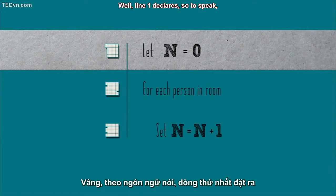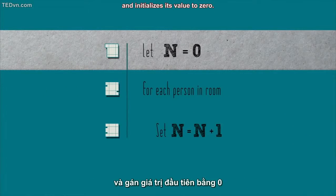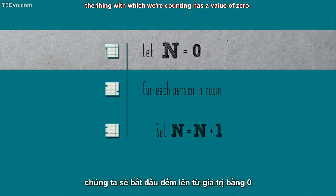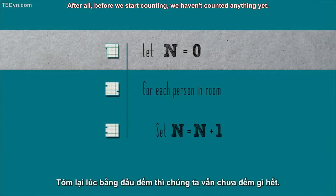Line one declares a variable called n and initializes its value to zero. This just means that at the beginning of our algorithm, the thing with which we're counting has a value of zero. After all, before we start counting, we haven't counted anything yet.